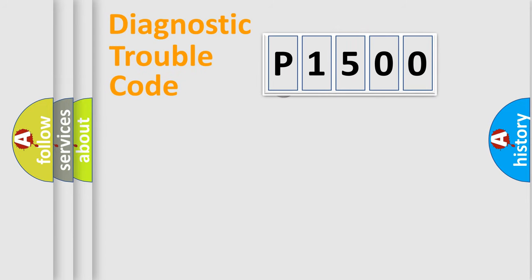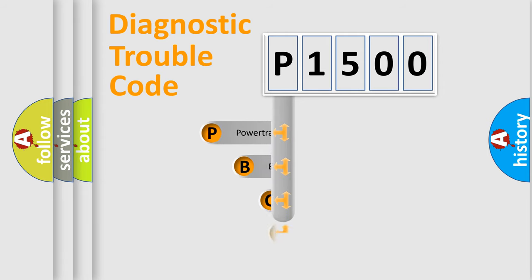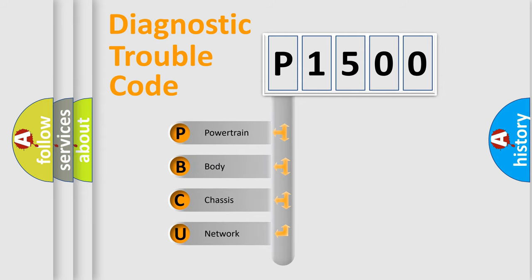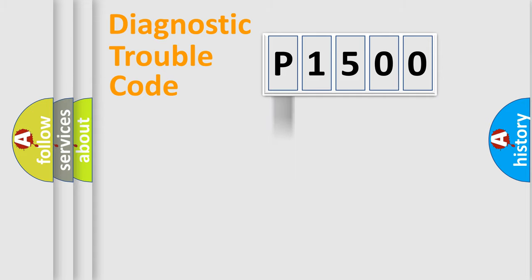First, let's look at the history of diagnostic fault code composition according to the OBD2 protocol, which is unified for all automakers since 2000. We divide the electric system of the automobile into four basic units: Powertrain, Body, Chassis, and Network. This distribution is defined in the first character of the code.